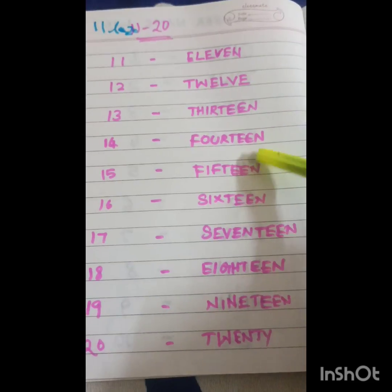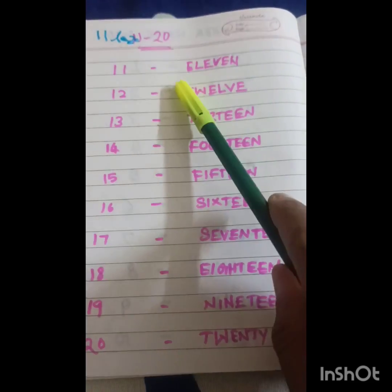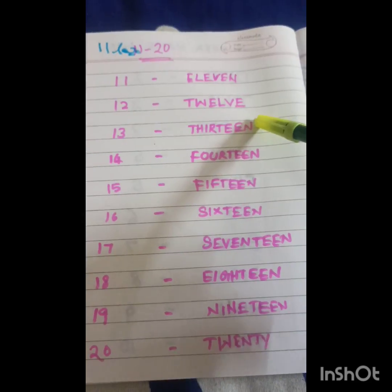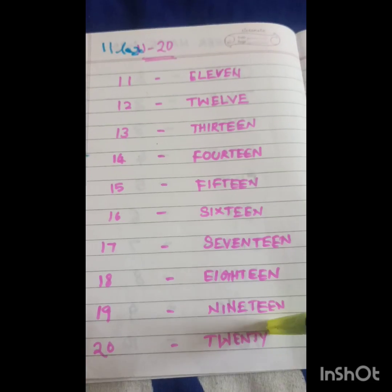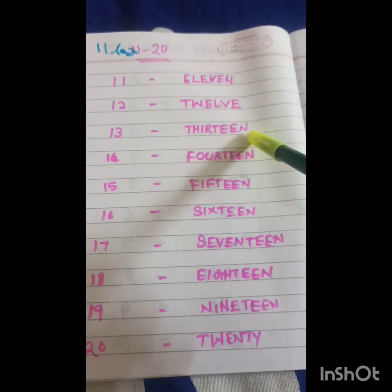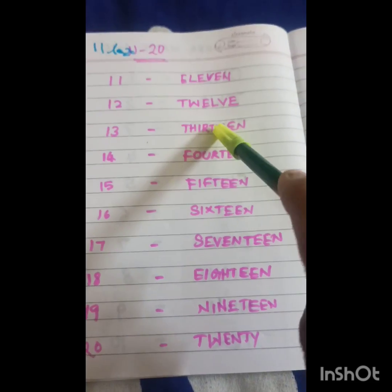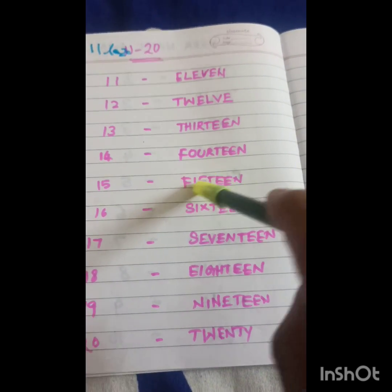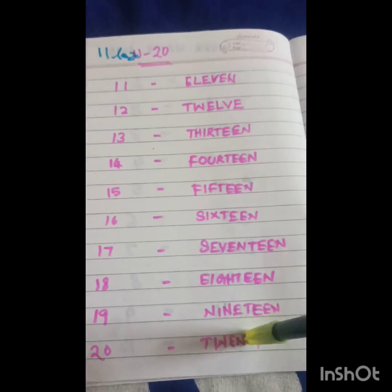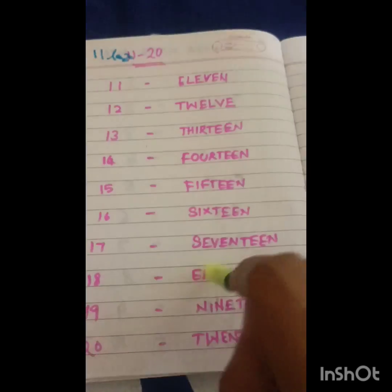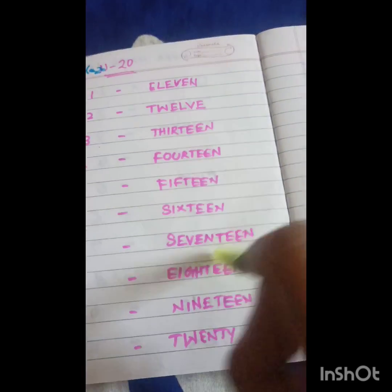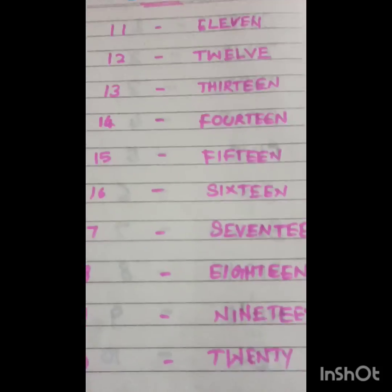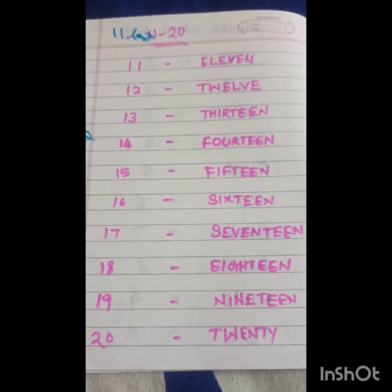So children, you should remember two things. The first two, 11 and 12, you should remember well. And for all others, from 13 to 19, it will end with teen. And for 13, you should remove D and put T. For 15, you should remove V-E and put F. For all other numbers, put the spelling of the number first, then add teen. Hope you will understand this. We'll see in the next video. Thank you.